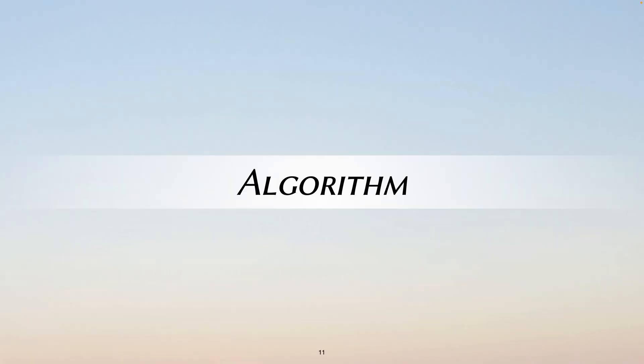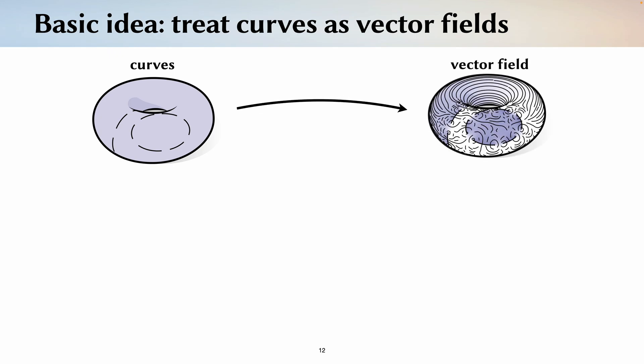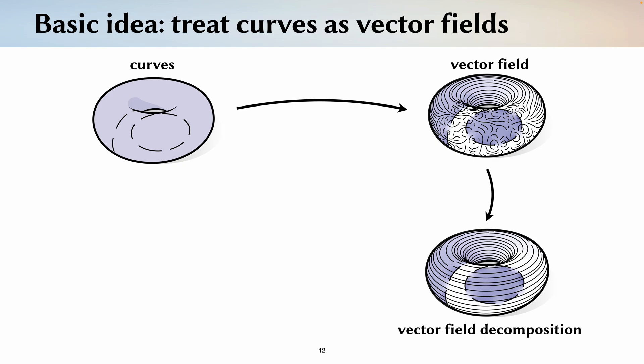Now let's talk about our algorithm. So here's the basic idea of what we do. Given some completely unstructured collection of broken curves, it's really difficult to reason about them directly. So we instead turn the curves into vector fields, which are objects we do know how to decompose. And then we turn this decomposition of the vector field into a decomposition of our curve.